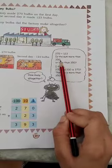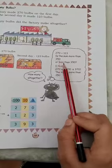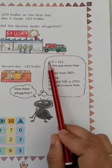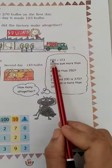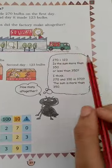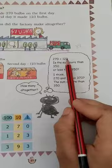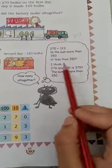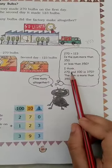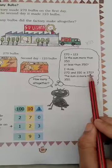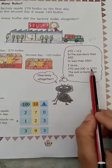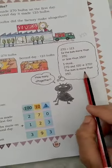Is the sum more than 350 or less than 350? Let's see. We count hundreds, 2 plus 1, so 300 something. Now we count tens, 70 plus 20, how much? 90. And 0 plus 3 is 3. So I think it's more than 350. 270 and 100 is 370, so the sum is more than 350.